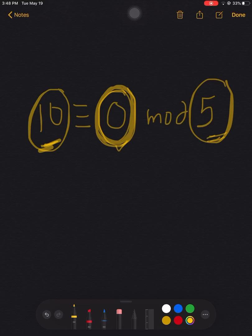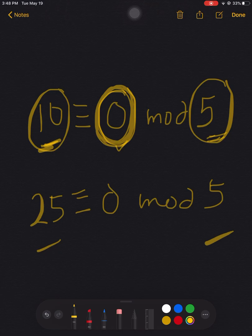Okay, so if we have 25, say, modulo 5, and 25 is divisible by 5, automatically the residue here is 0. So I hope you got the gist of this topic, guys.